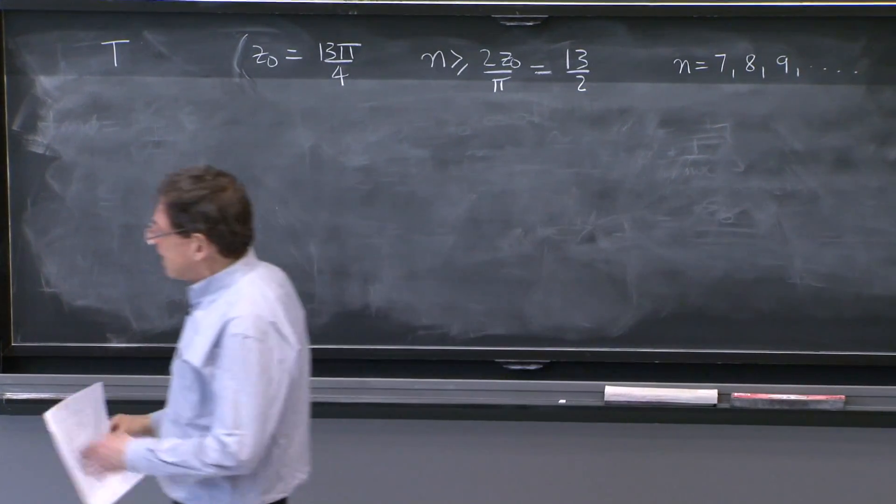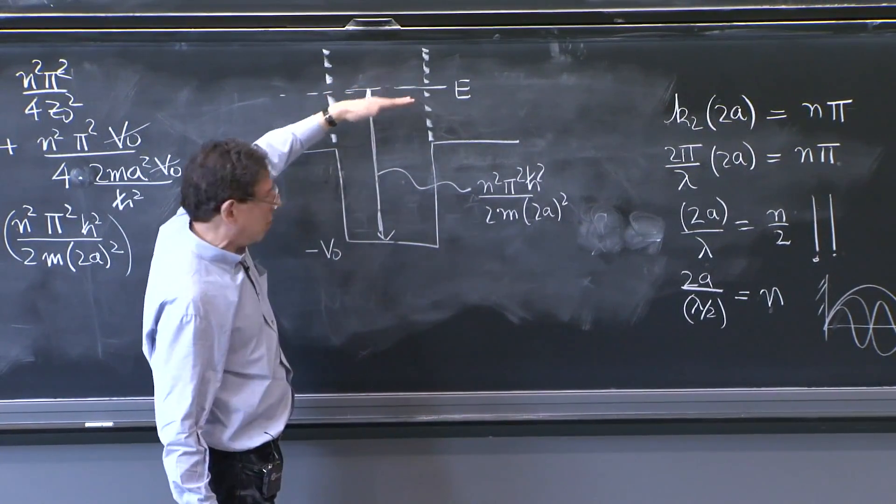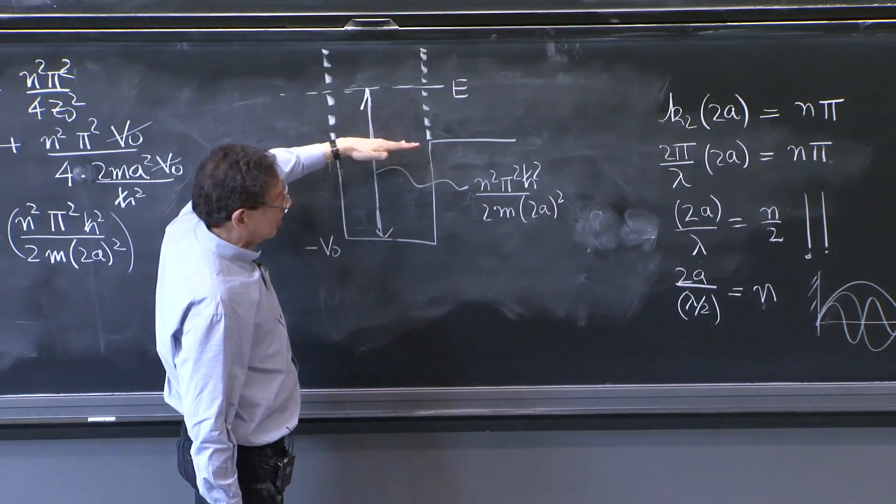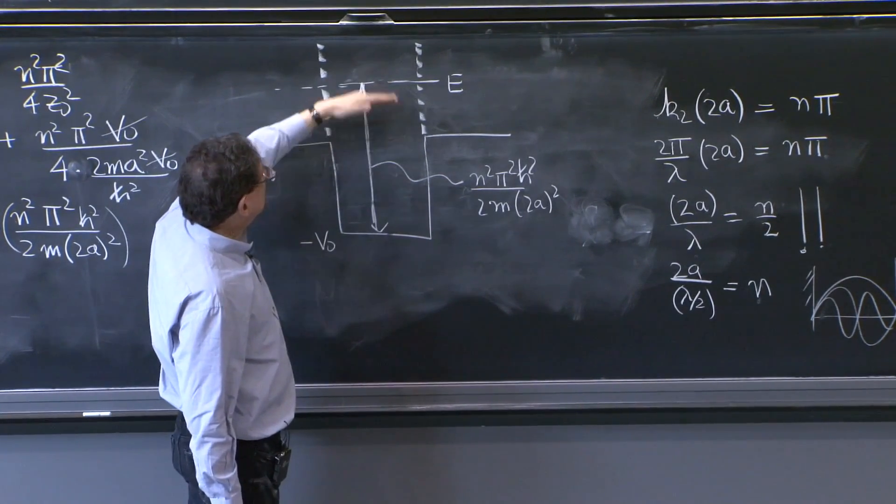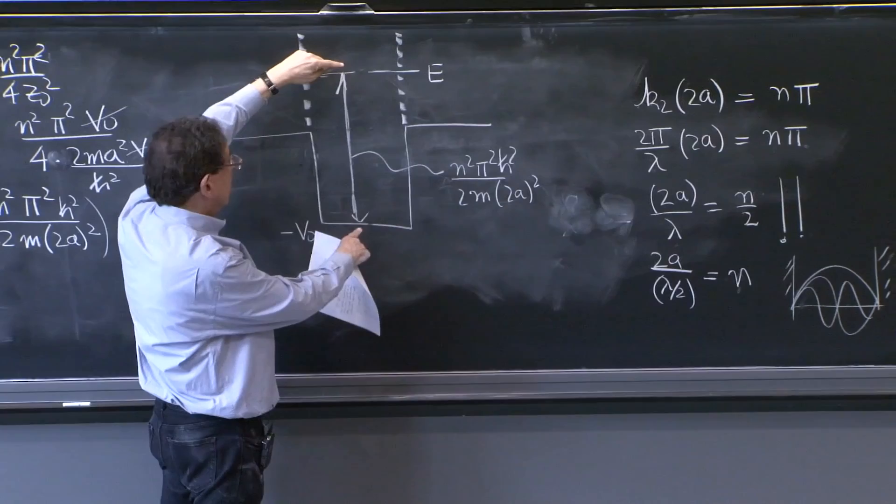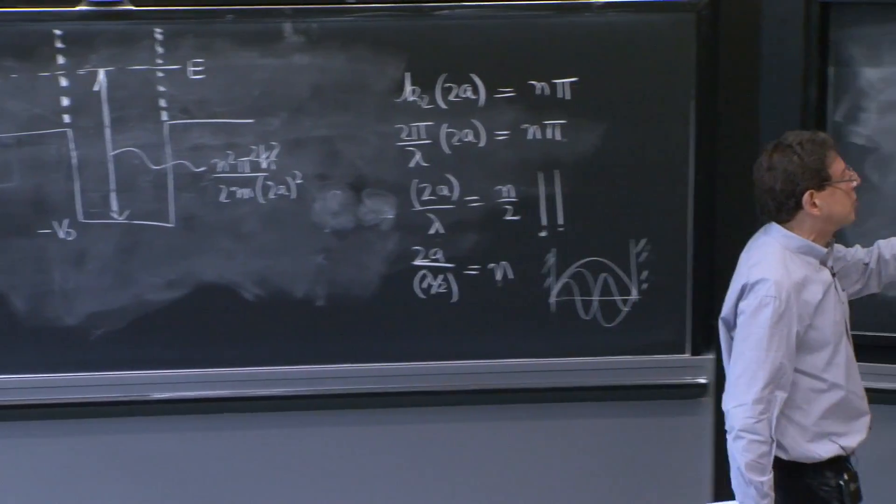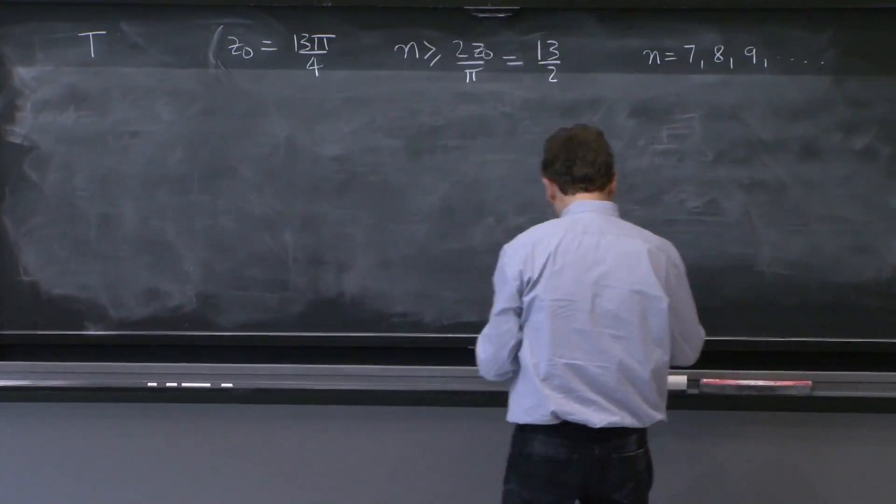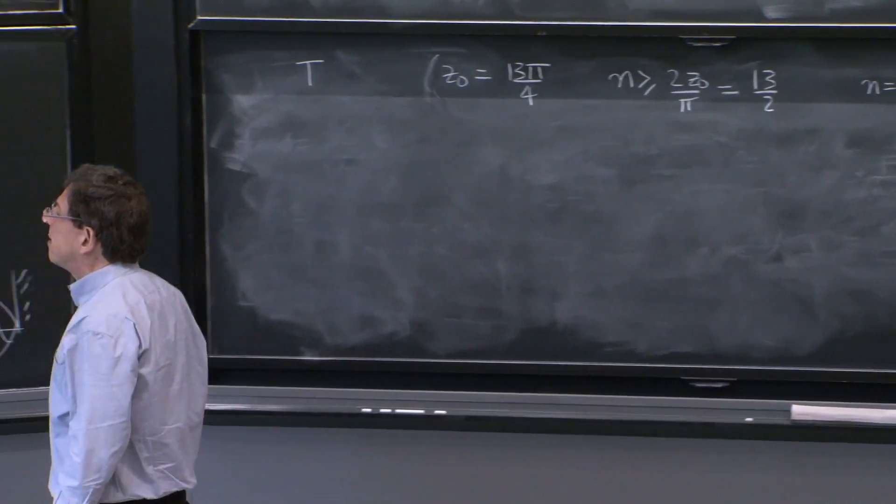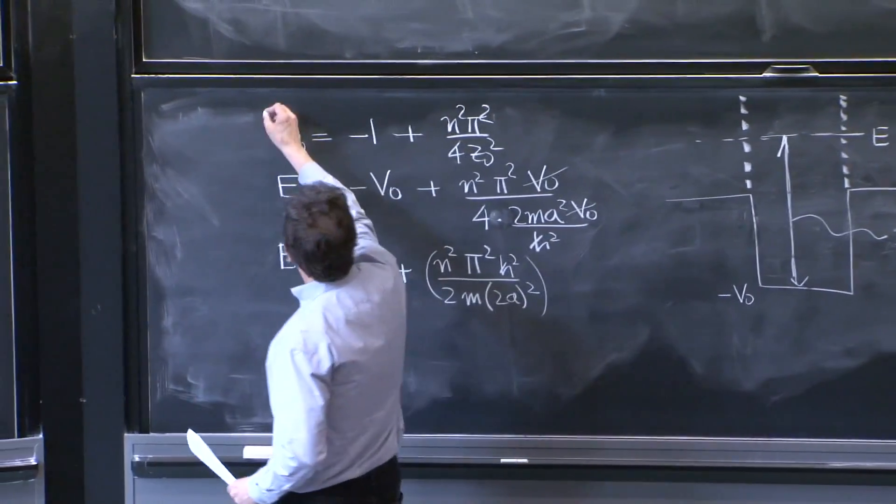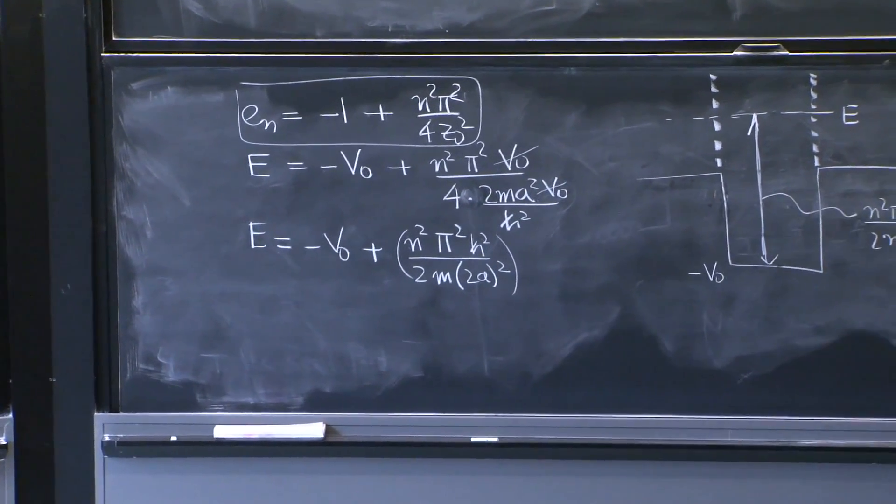Remember, this n counts which bound state of the infinite square well we are talking about. And the energies you're interested in are positive energies. So positive energies mean that you have sufficiently large n. And the n that is sufficiently large is 7 in this case. So you can then determine from this formula what is the value of en over v0.